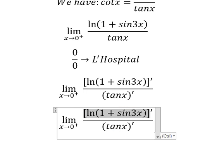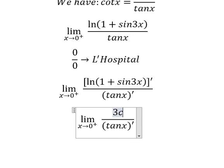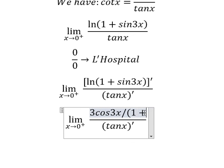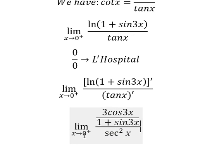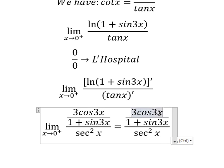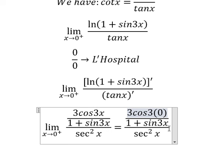So for this one we have 3 cos 3x over 1 plus sin 3x. The next one is secant squared x. Now I will put zero in here, here, and here. So we have the final answer in here.